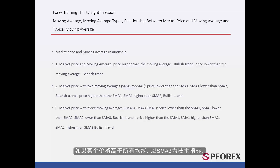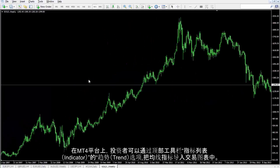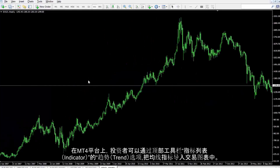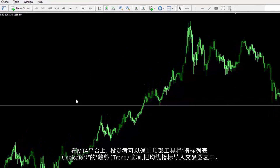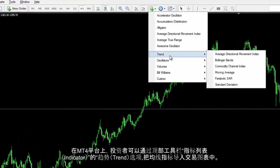If a price is higher than all of them and SMA1 is above SMA2 with SMA3 as the baseline indicator, then an uptrend would be more presumptive. On MetaTrader 4, a trader can import the MA indicator into the desired chart from the Trends section of the indicator list in the top toolbar.